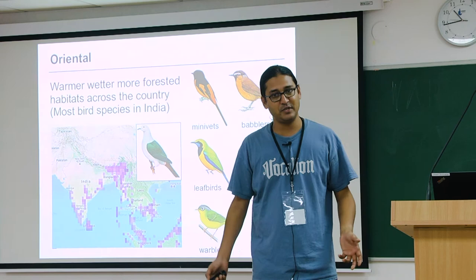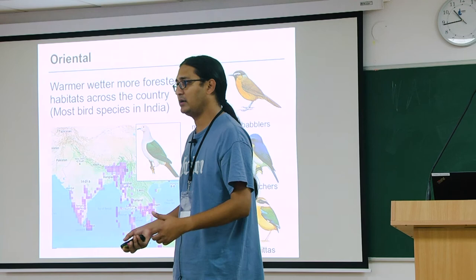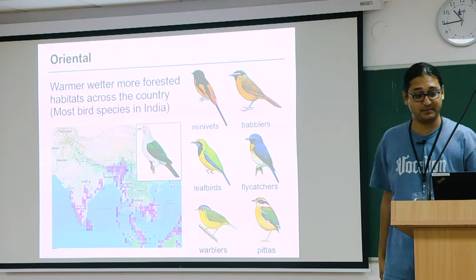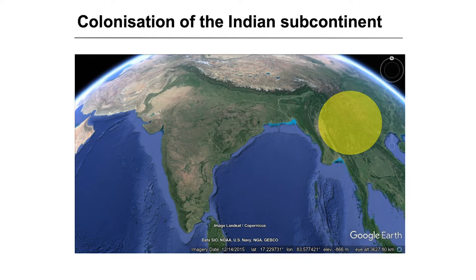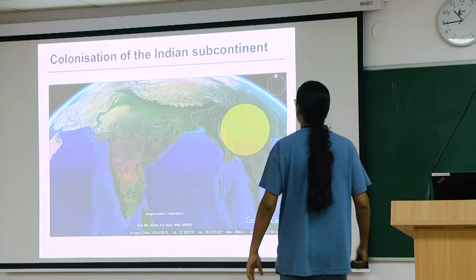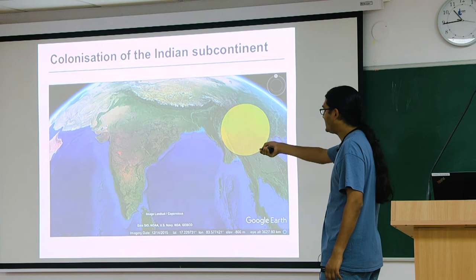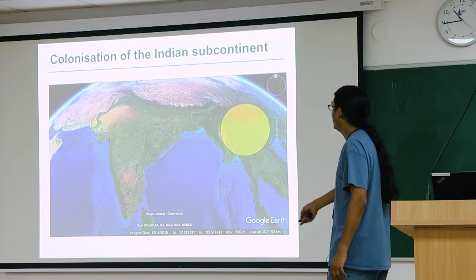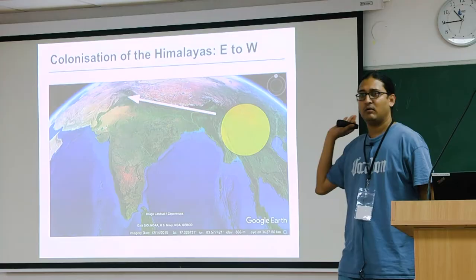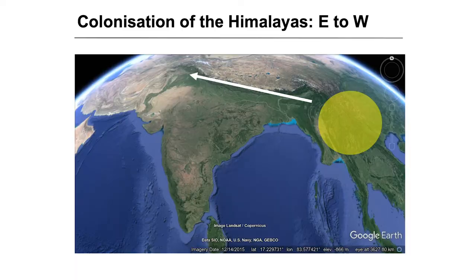All the birds in the Indian subcontinent have come in from somewhere else — the Indian plate did not have birds. Let's look at the colonisation of the Indian subcontinent. Palearctic species came in from the North and like the Upper and Trans-Himalayas. Saharo-Arabian came in from the West, occupying arid habitats of the Peninsula and Central India. For the Oriental colonisation of the Himalayas from South China: when the Himalayas rose, species colonised from East towards the West, since all the species were in South China and the northern Myanmar region.